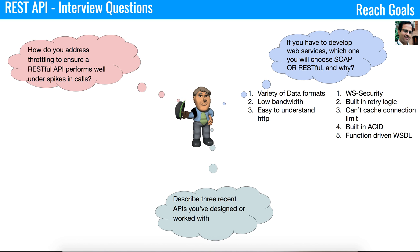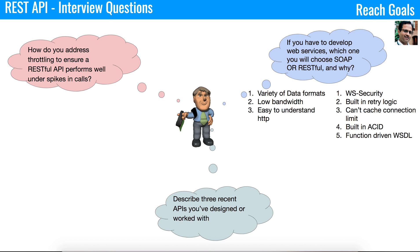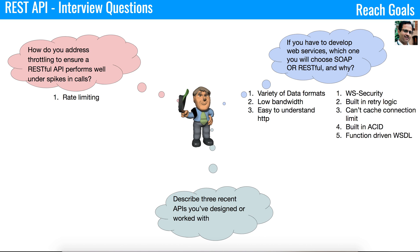The next question is: how do you address throttling to ensure a RESTful API performs well during spikes in calls? The interviewer wants to understand whether you've really worked with RESTful APIs and used throttling. Most RESTful APIs have throttling, so if you've worked with them you should know what it is. Let's understand the different types of throttling and why it's used.